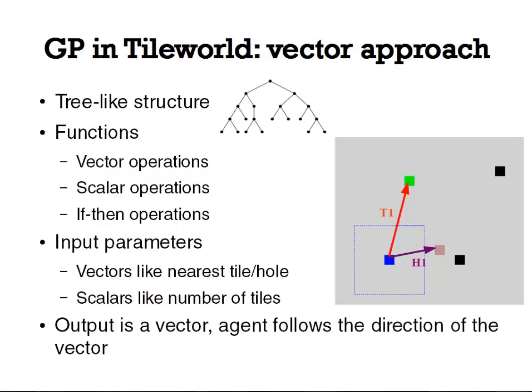So, how does the program work? The principle is very simple. The evolved program has tree-like structures where the nodes are either vector or scalar operations, or if-then conditions. The leaves are then parameters fetched from memory and communication with the other agents. It can be, for example, a vector to the nearest tile, to the nearest hole, vectors to other agents, or the number of carried tiles.